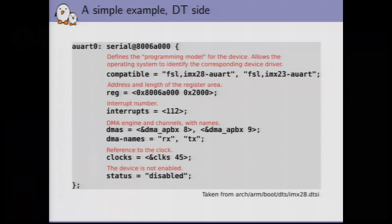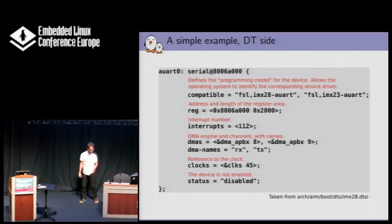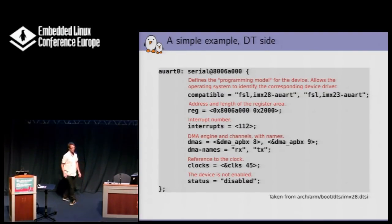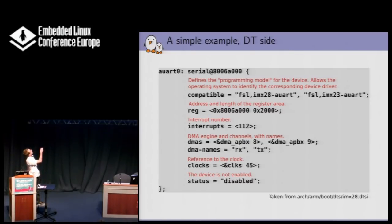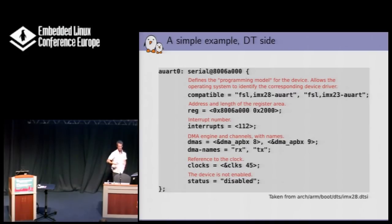Now a simple real example of one node of a device tree. I've taken one from the IMX28 DTSI, which is SoC-level information. We have a label, AUR0, then the node name - it's serial at some address - and the unit address, which for clarity is the same as the address where the registers of this device are in memory, though you could use 0, 1, or anything. What's really important is what we have in the properties. The first property, compatible, is probably the most important one and the most complex to understand, so I'm going to talk about it several times throughout this presentation.